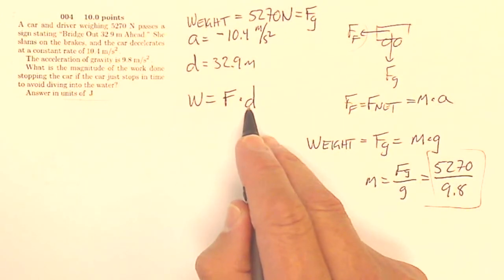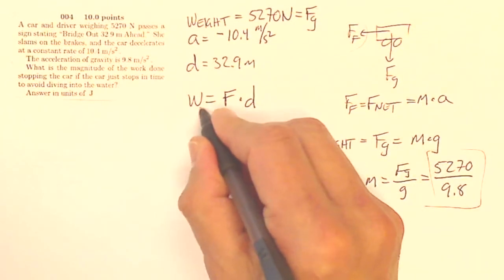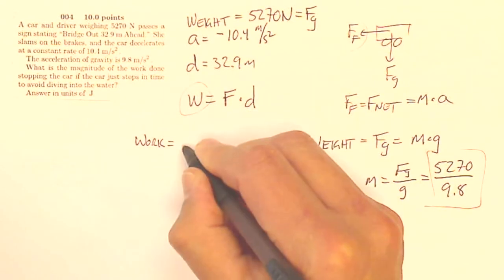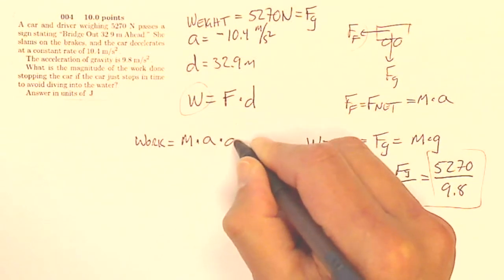So now my work is my force times distance. My force is mass times acceleration. So not my weight, my work. So my work is going to be my force, which is my mass times my acceleration times my distance.